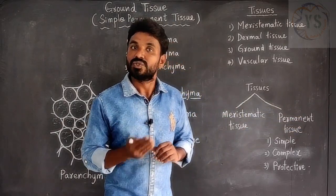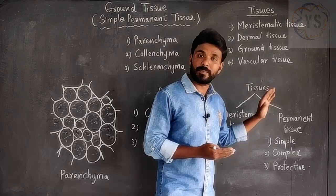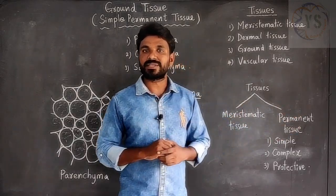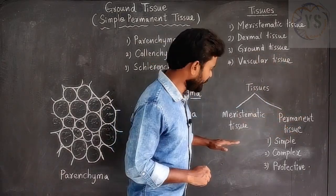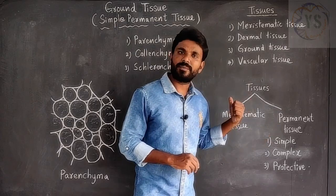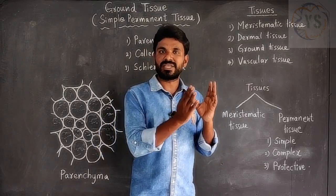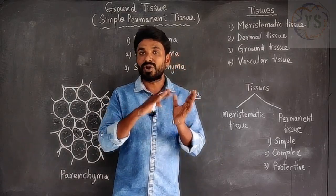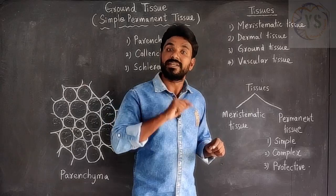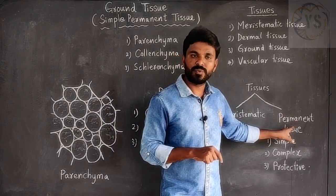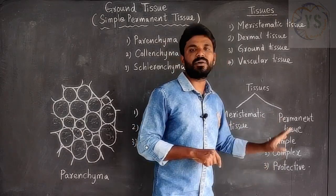Meristematic tissue cells have cell division capacity, so all the cells present in meristematic tissue can divide very fast — they are responsible for growth and development. Permanent tissue cells do not have any cell division capacity, so they involve in other functions. Permanent tissue is developed from meristematic tissue. Meristematic tissue develops more cells, and some of those cells lose cell division capacity and get modified into a special tissue. Under permanent tissue, three kinds are present: simple permanent tissue, complex permanent tissue, and protective permanent tissue.